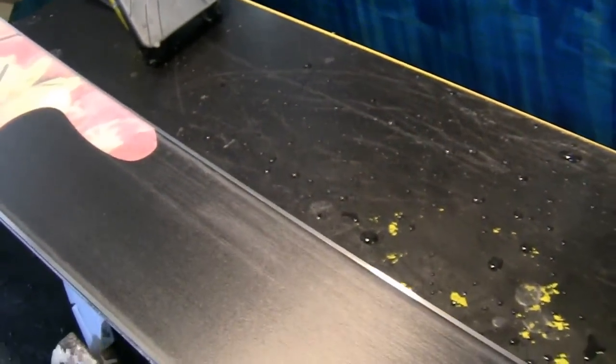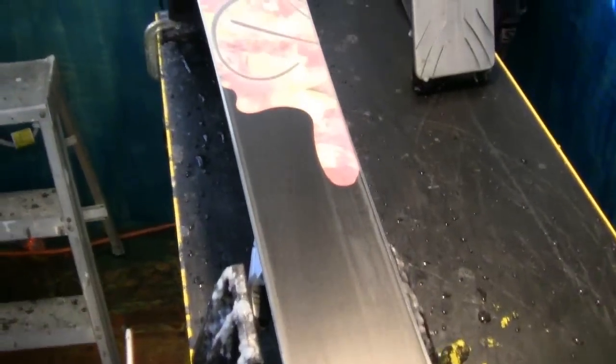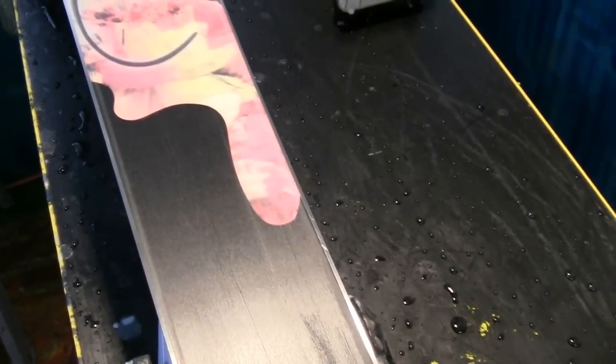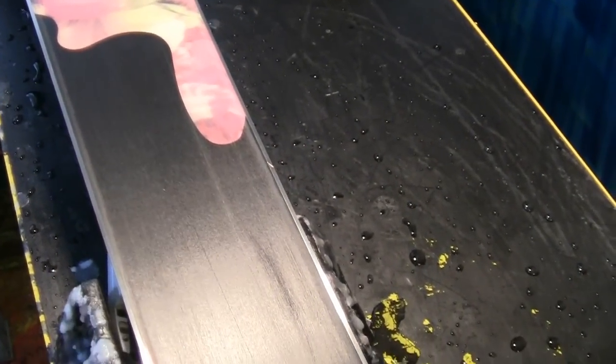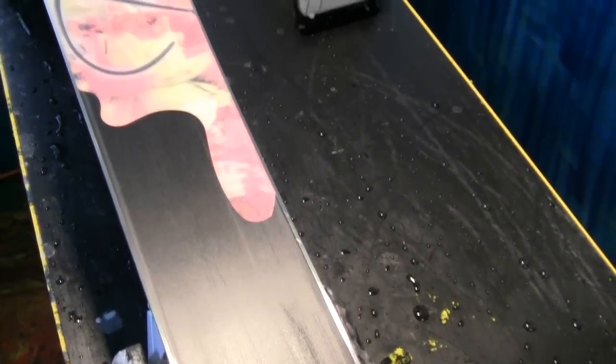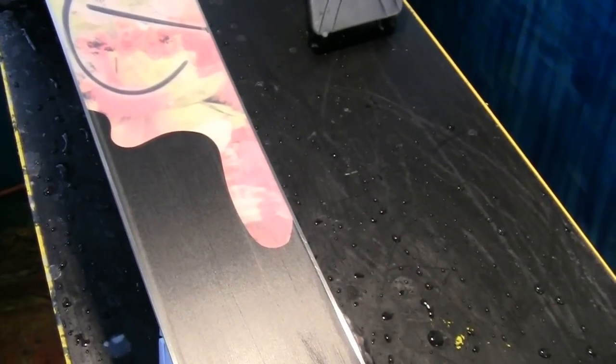There you go. Once you've done that, now we're ready to do the waxing and get started with the base preparation. Like I told you, first we're gonna lay down some soft yellow wax, cook that into the ski, scrape it and brush it. Then we're gonna move on to a pink wax, scrape it and brush it. Then we're gonna move on to a blue wax.